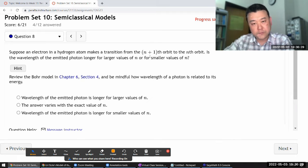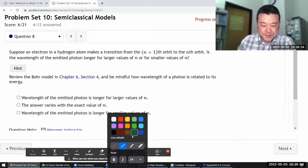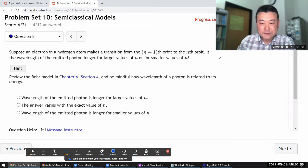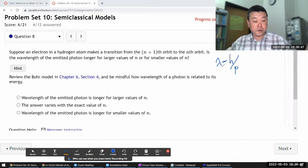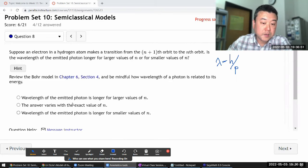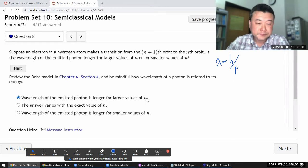For the smaller photon energy, smaller momentum, and going back to this de Broglie relationship, which relates the wavelength to the momentum of the photon. So if this momentum is very small, the wavelength will be very large or very long. So the wavelength of the emitted photon is longer for larger values of n.